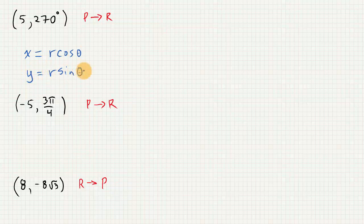So it's really just a direct substitution. So x will be equal to 5 times cosine of 270. That's going to be 5 times the cosine of 270, which is 0, so x is 0.